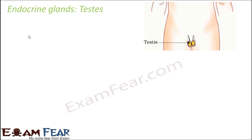Now we will talk about the next one, that is testes. I have written endocrine glands and then testes, but that doesn't mean that testes is an endocrine gland — testes serve a dual purpose. It is basically the sexual organ for males, but at the same time they secrete the male sex hormones, and that is why they fall under the category of endocrine glands.